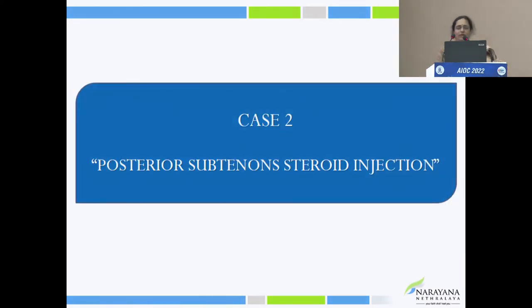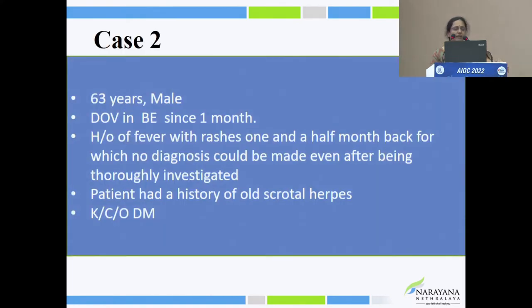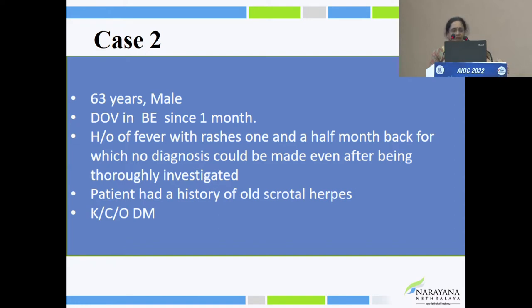Confocal can be used as an indirect measure to show the infective pattern of keratic precipitates in CMV anterior uveitis. Moving to the next case — posterior subtenon steroid injection. Case 2: A 33-year-old male with defective vision in both eyes for one month, with history of fever and rashes one and a half months back for which no diagnosis was made.